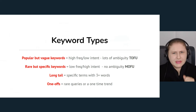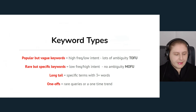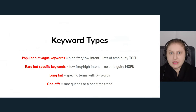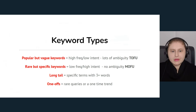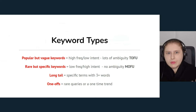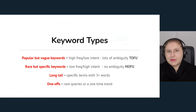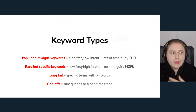Long tail keywords — any query with three or more words — show strong intent. If someone searches for "sleeveless cocktail dress," you know they're being specific about what they want. Then you have one-off queries, very rare — like unicorns — or one-time trends that pop up occasionally and work quite well. Pay attention to these, but don't be too worried about their performance. Some queries are simply meant to bring in one client once in a while.